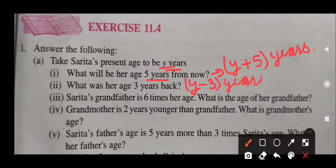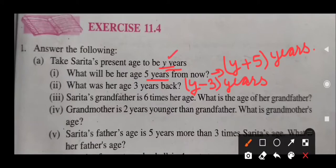We have to write down units with this — we have to take care of this. Now next: Sarita's grandfather is 6 times her age. 6 times her age means we have to multiply by 6. We multiply Sarita's present age, which is Y years. So grandfather's age will be 6Y years. Write down the units — take care of this.